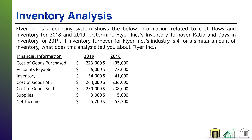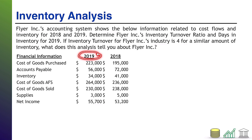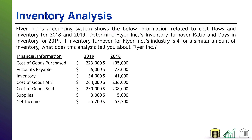Finally, inventory analysis. In our lectures we covered two calculations: the inventory turnover ratio and days in inventory. Flyer Inc's accounting system shows information related to cost flows and inventory for 2018 and 2019. Determine Flyer Inc's inventory turnover ratio and days in inventory for 2019. Then, given that the industry inventory turnover is four for a similar amount of inventory, what does this analysis tell you about Flyer Inc?